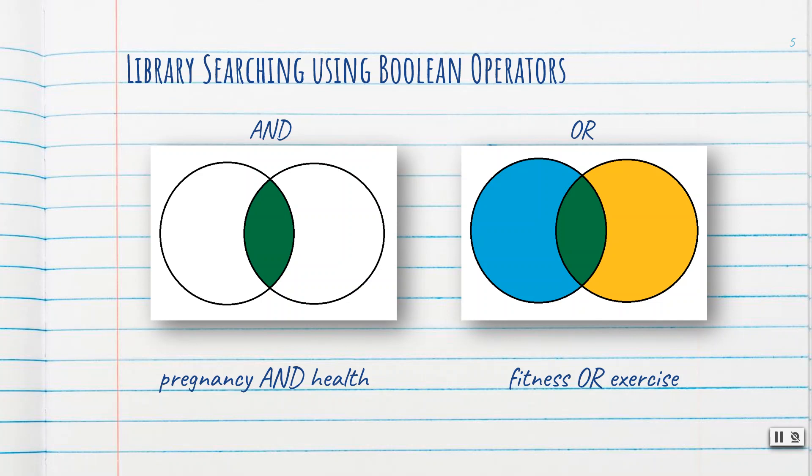When you use the Boolean operator OR, this will expand your search so you may find either of these terms. For example: fitness OR exercise. Remember, OR means more.